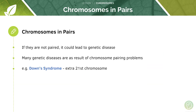It's so important that chromosomes are paired, and in fact if they're not, this can actually lead to genetic disease. An example to remember for your exam is that if you have an extra chromosome 21, this gives rise to Down syndrome. This could be a really good example to slip into an essay.